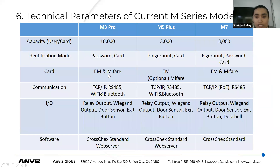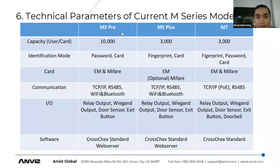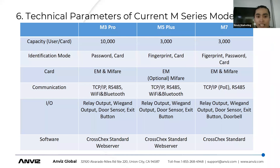Now let's look at the technical parameters of these devices. There is a list of current models including M3 Pro, M5 Plus, and M7. The older M3, M5, and M5 Pro are no longer in production, so we recommend using the latest versions. Looking at capacity differences: M3 Pro has the largest capacity because it doesn't store any biometric information — it only supports cards and passwords. M5 Plus and M7 both support 3,000 users.